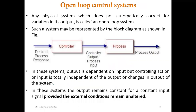Here you can see the figure of an open loop control system. As the name suggests, open loop means the loop is not closed — it is open. The system does not have a feedback from output to input. Any physical system which does not automatically correct for variation in its output is called an open loop system — no feedback loop is present.